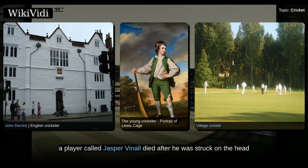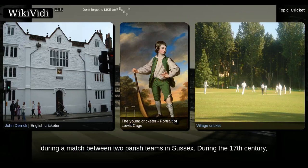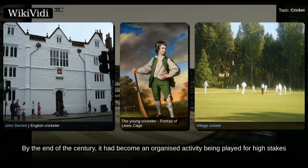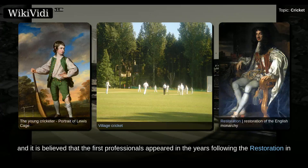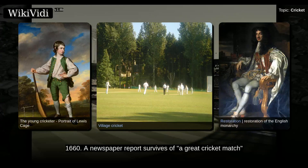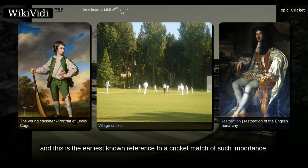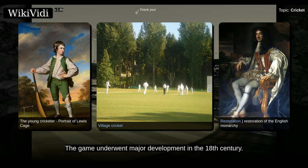In 1624, a player called Jasper Vinald died after he was struck on the head during a match between two parish teams in Sussex. During the 17th century, numerous references indicate the growth of cricket in the southeast of England. By the end of the century, it had become an organized activity being played for high stakes, and it is believed that the first professionals appeared in the years following the Restoration in 1660. A newspaper report survives of a great cricket match with 11 players aside that was played for high stakes in Sussex in 1696, and this is the earliest known reference to a cricket match of such importance.